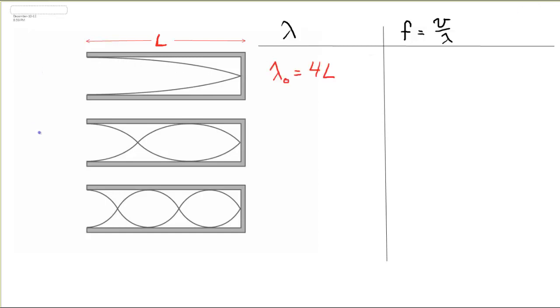Now what about the first overtone, lambda 1? We can see from the picture that I start at equilibrium, I go to my first crest, back to equilibrium—there's half a wave—and then down to the first trough. So we've got three quarters of a wave inside that length, or we can write it as one length equals three quarters of a wave. So if I take that and solve it for lambda, I get lambda 1 is four-thirds L.